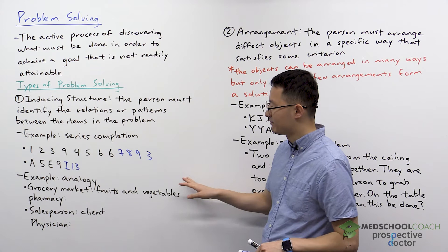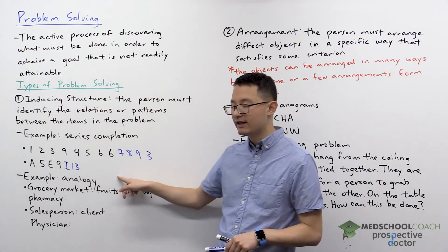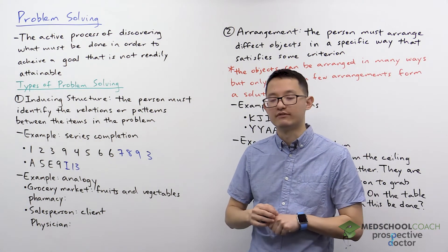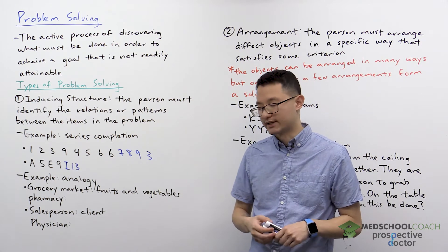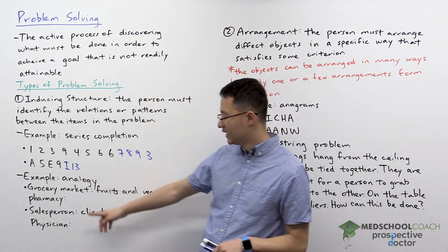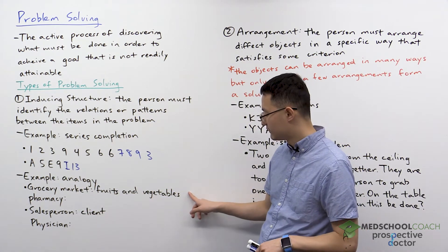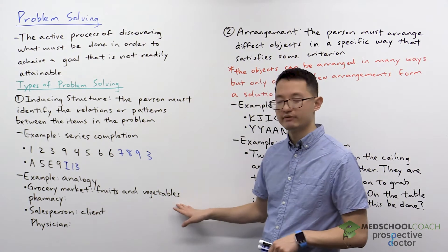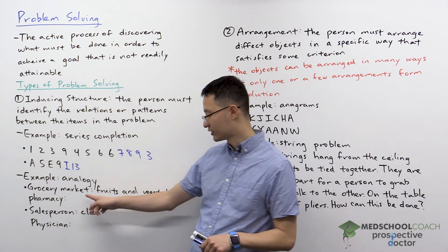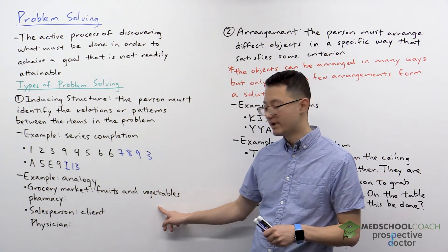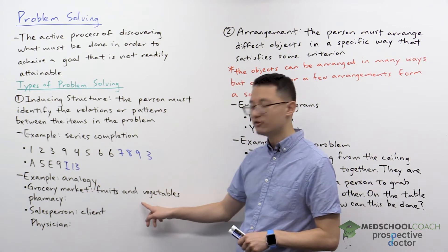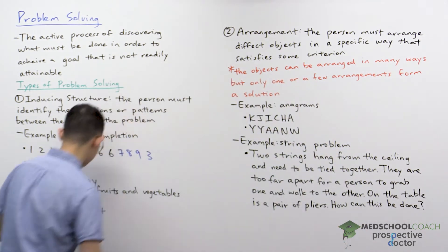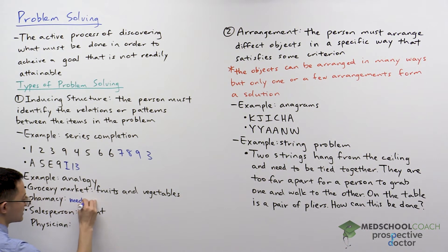Another example of inducing structure is analogy problems. In analogy problems you're given an example of a relationship and then you have to apply that to a new situation or topic. For our first one: grocery market is to fruits and vegetables as pharmacy is to what? We need to figure out the relationship — grocery markets sell fruits and vegetables — so we just need to know what pharmacies sell. Since pharmacies sell medication, that's the answer.